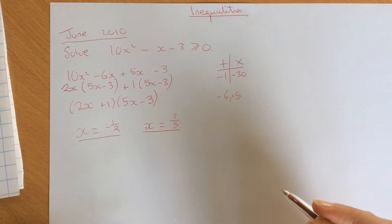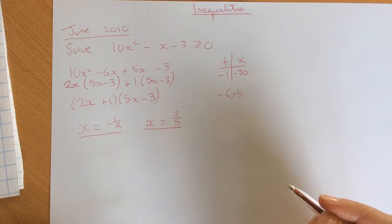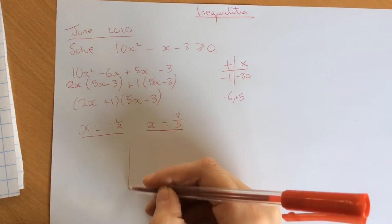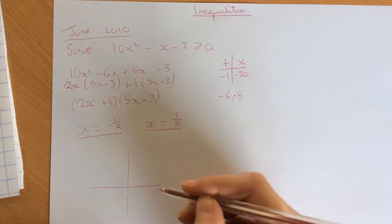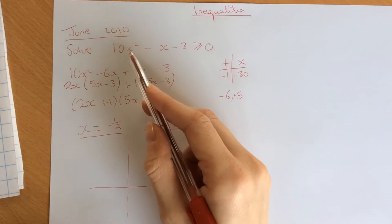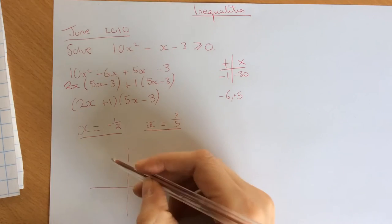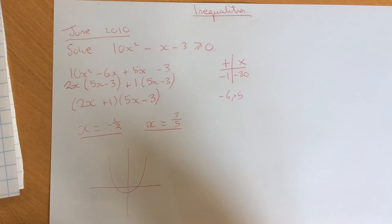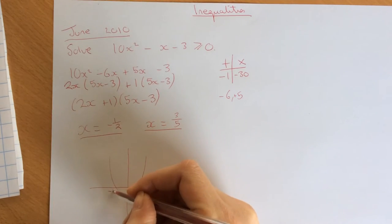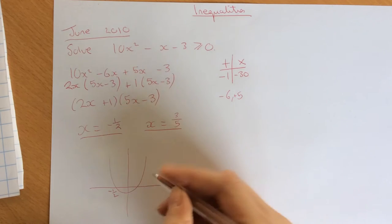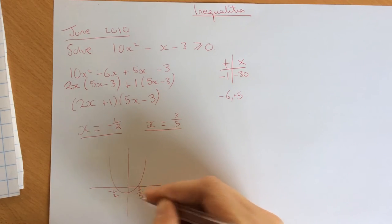We've got our two values of x. Now we need to sketch that onto a graph to find out what the inequality is. Quick sketch of a graph. It's a quadratic and it's positive, so it's going to be a basic u-shape like that. We've got x is minus 1 half, which I can put on there, and x is 3 fifths, which go there.